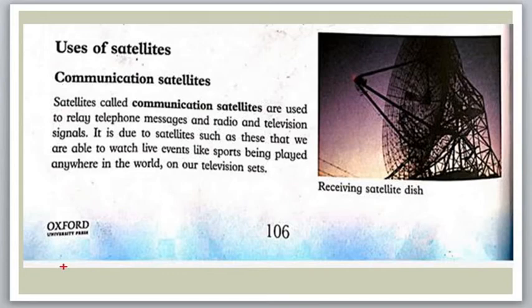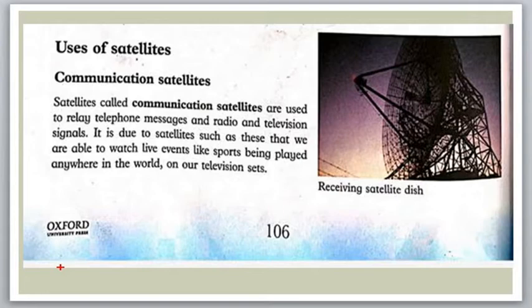Hello students. What is geocentric orbit and how many types of satellites are there — the polar orbit and the geostationary orbit? These are all satellites and orbits which are different types of satellites revolving at different distances. We have different scientific information, and scientists and humans are trying to make better human life and learn more and better ways.